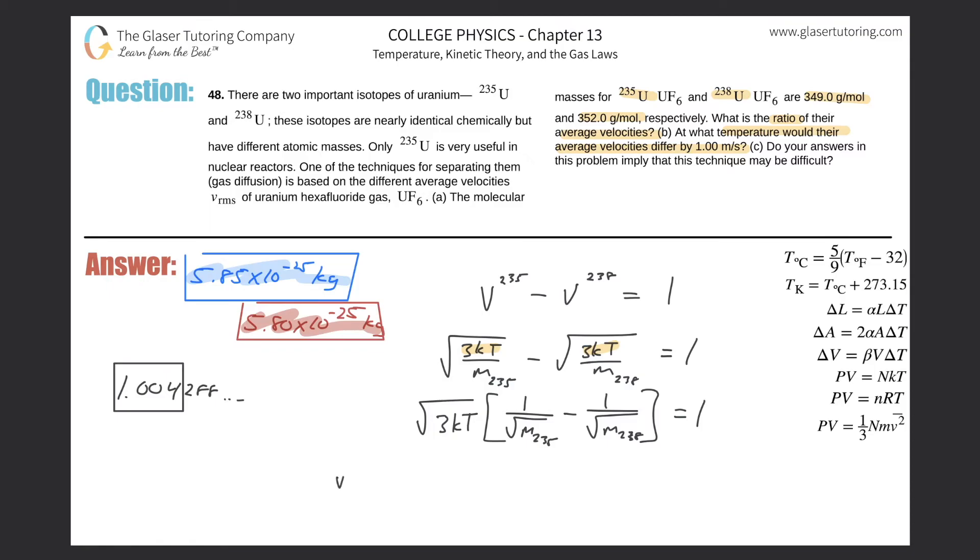Now let's start plugging in some values. Here we have the square root of three times the Boltzmann constant of 1.38 times 10 to the minus 23 times temperature, that's all under the square root. Then we're going to multiply this by one over the mass of 235, which was 5.8 times 10 to the minus 25, minus one over the square root of 5.85 times 10 to the minus 25, and that's all equal to one.